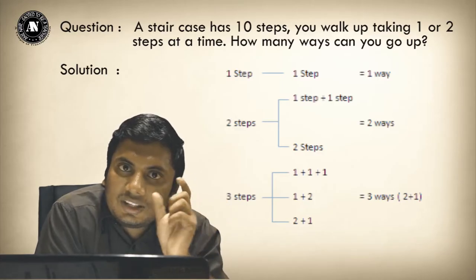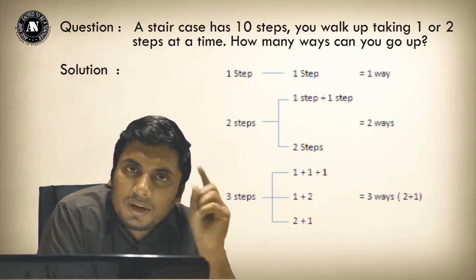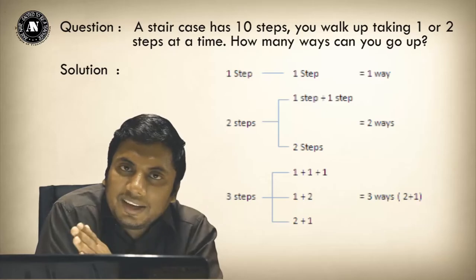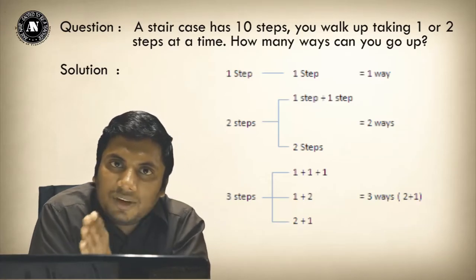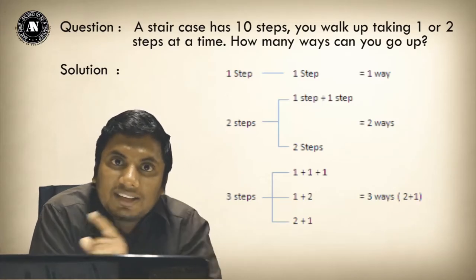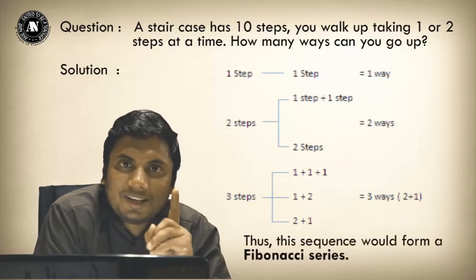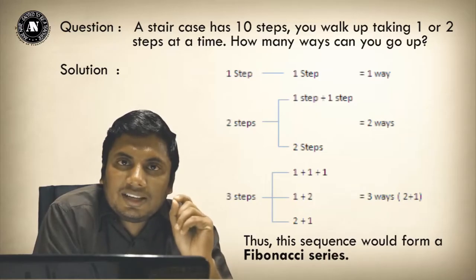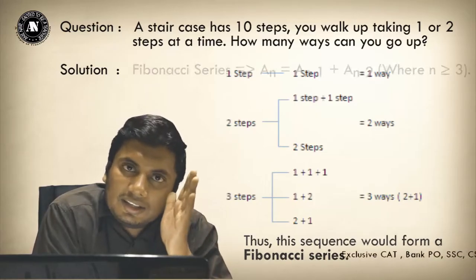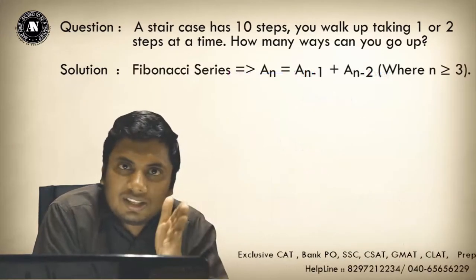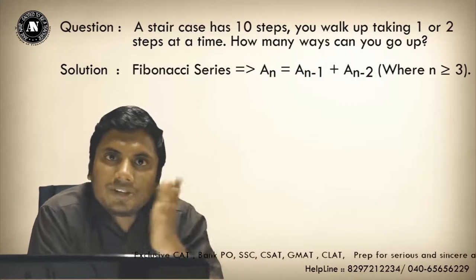Three is nothing but 2+1. Next way will be five, which is 3+2. Next way will be 5+3 equals 8. Yes, yes, you got it right! This sequence is nothing but a Fibonacci sequence. So what is Fibonacci sequence? Add the last two numbers to get the next number.